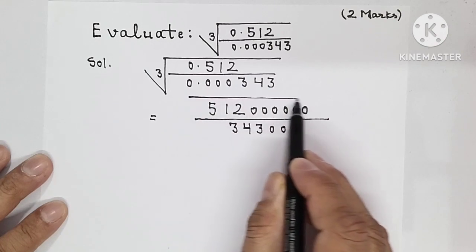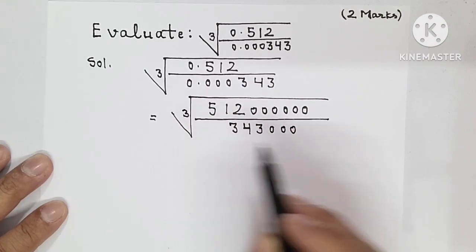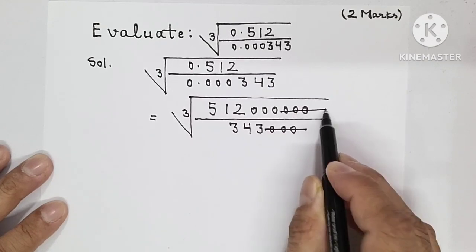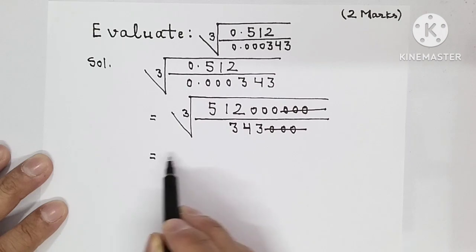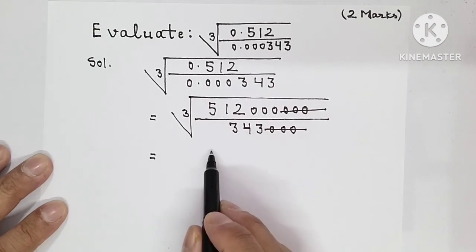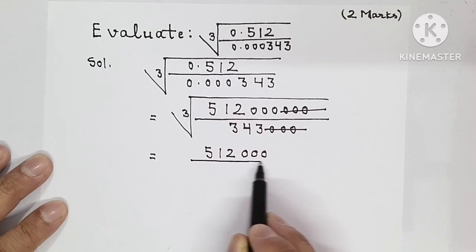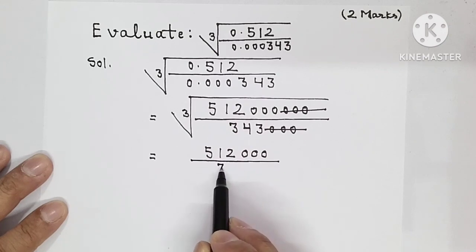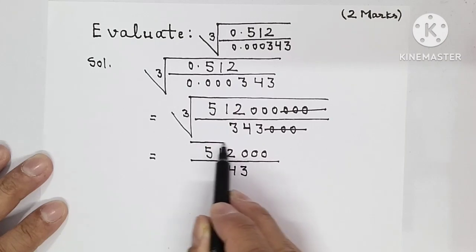Now, 3 zeros here and 3 zeros here will be cancelled out. So we are left with 512 and three zeros upon 343, and its cube root.